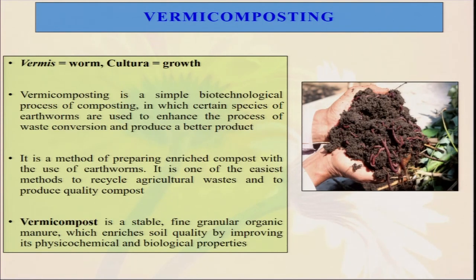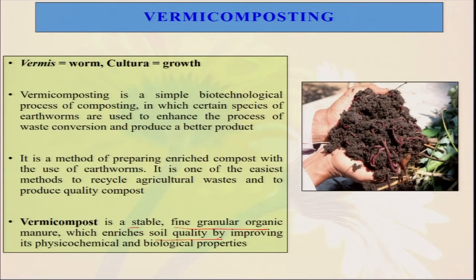The normal composting methods are time-taking — sometimes 4 months, 5 months, 6 months. Nature provides different types of earthworms, and these earthworms are extremely helpful for decomposing our organic residuals. They eat up all these organic residues, and in the eating process whatever organic food goes through their body comes out as excreta, enhancing quality and nutrient enrichment. Ultimately we get a very good quality compost. Vermicompost is a stable, fine granular organic manure which enriches soil quality by improving its physicochemical and biological properties. Whenever we apply vermicompost in our field, lots of eggs of earthworms as well as small earthworms also go into the field, enriching our field further.